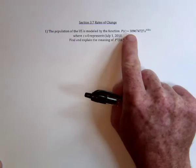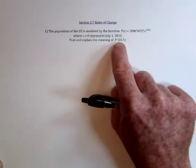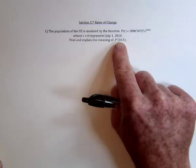We've got this function that gives the population of the United States basically t years after July 1st, 2010. And we're supposed to take the derivative, which is a rate of change, which means how fast is the population changing at that particular time. And the time is going to be 10 and a half years from July 1st, 2010.